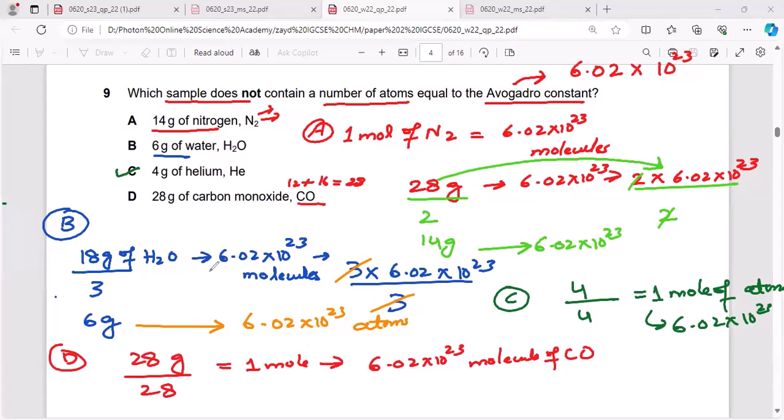But I am talking about atoms. So I have to multiply this with 2 because 1 CO contains 2 atoms. So 2 times 6.02 times 10 raised to the power 23. And you see this is not equal to Avogadro constant. So option D is the answer.